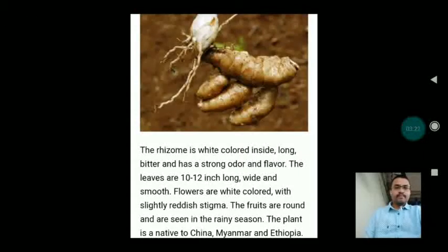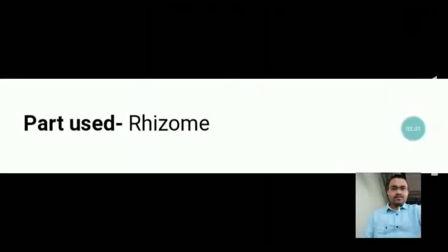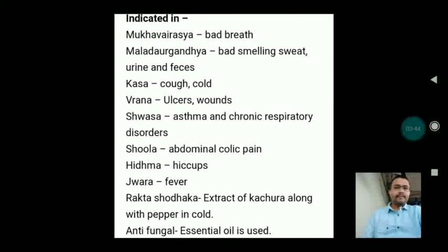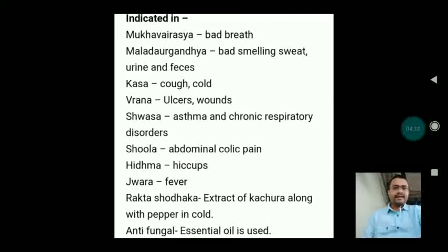The leaves are wide and smooth. The flowers are white colored with slightly reddish stigma. The fruits are round and are seen in the rainy season. The plant is native to China, Myanmar and Ethiopia. The part used is the rhizome. It is indicated in Mukha Vairasya (bad breath), Mala Durgandha (bad smelling sweat, urine and feces), Kasa (cough and cold), Vrana (ulcers and wounds), Shvasa (asthma and chronic respiratory disorders), Shula (abdominal colic pain), Hikka (hiccup), Jwara (fever). The extract of Kachura, which is another synonym of Sati, is used along with pepper in cold and as an antifungal essential oil.